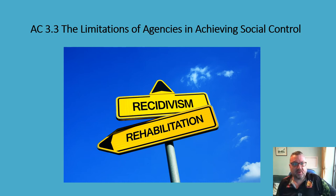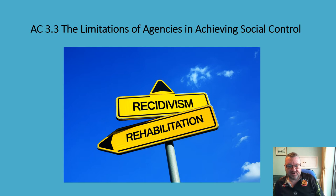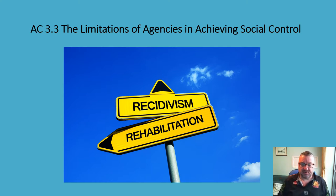We're going to look at AC 3.3, which is the limitations of agencies in achieving social control. Now we're moving towards the end of Unit 4 and these next two ACs, AC 3.3 and 3.4, really focus on the evaluation questions that come up in the exam. In evaluation questions, you're generally going to be asked to evaluate the strengths and weaknesses of the various different agencies within the criminal justice system in terms of how they achieve social control.